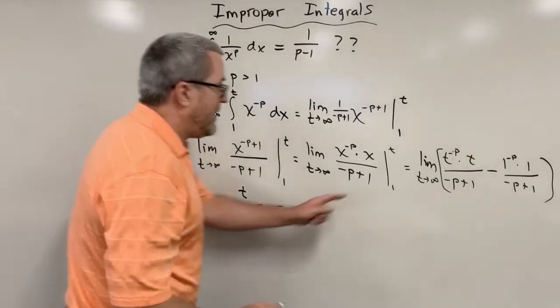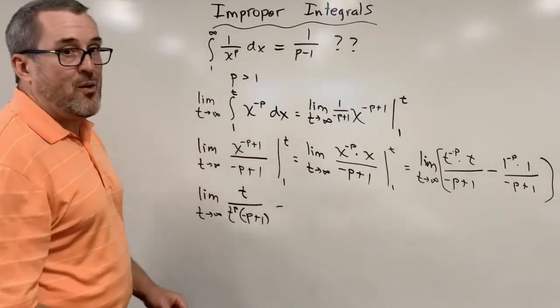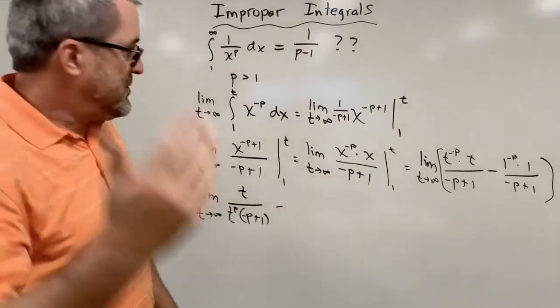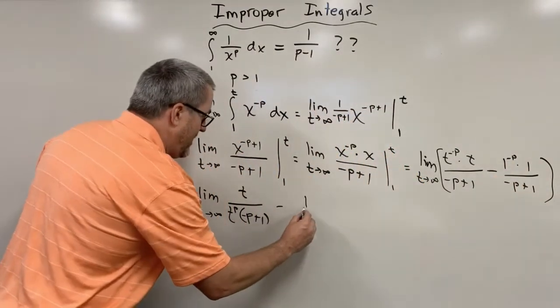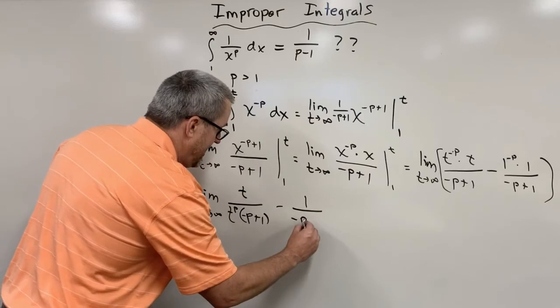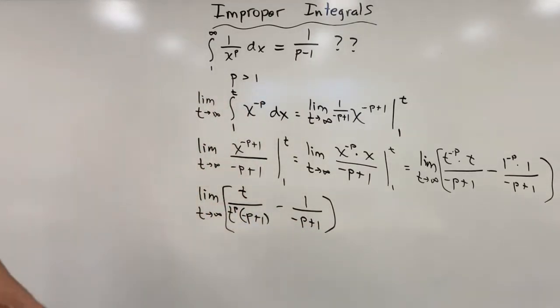And then, kind of likewise over here, if we put that one to the p in the denominator. Now, one to the p. Remember, p is a, we're doing integers greater than one. So one to a power is just one. So this is going to become one over one to the p, which is just one. Negative p plus one.